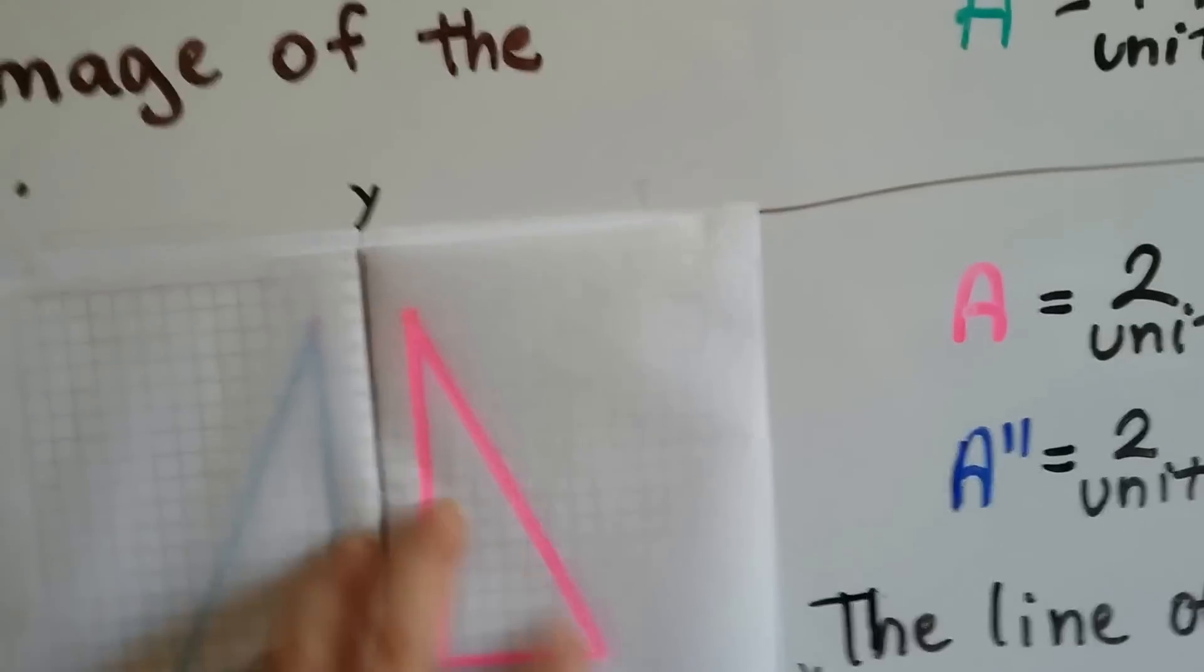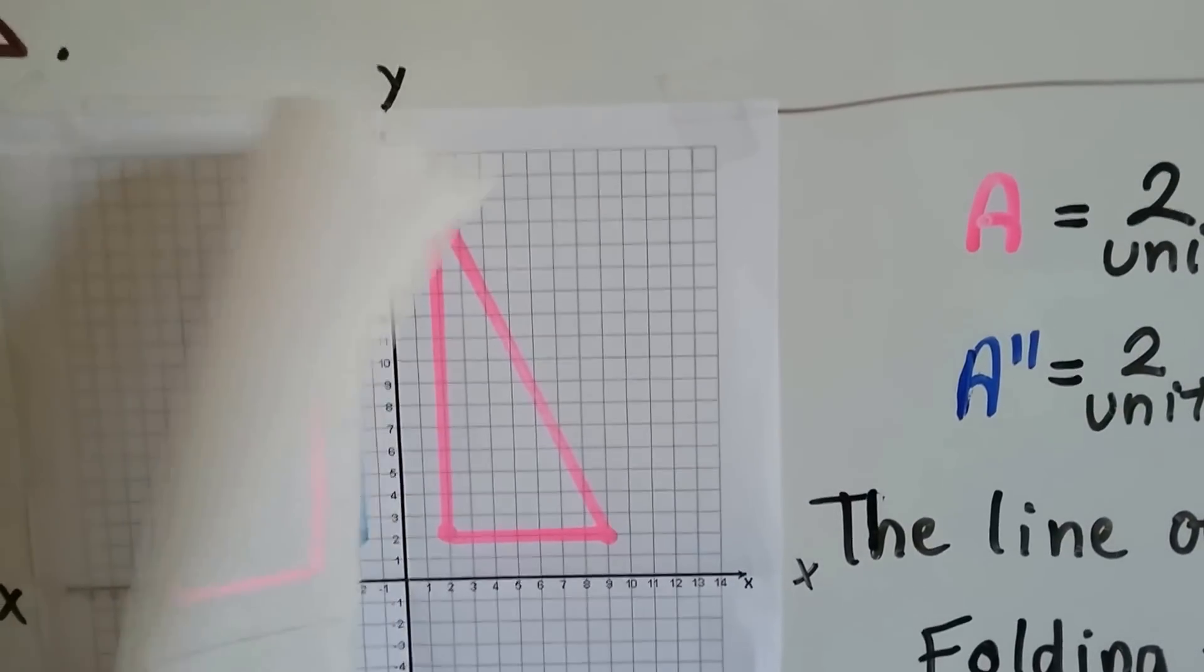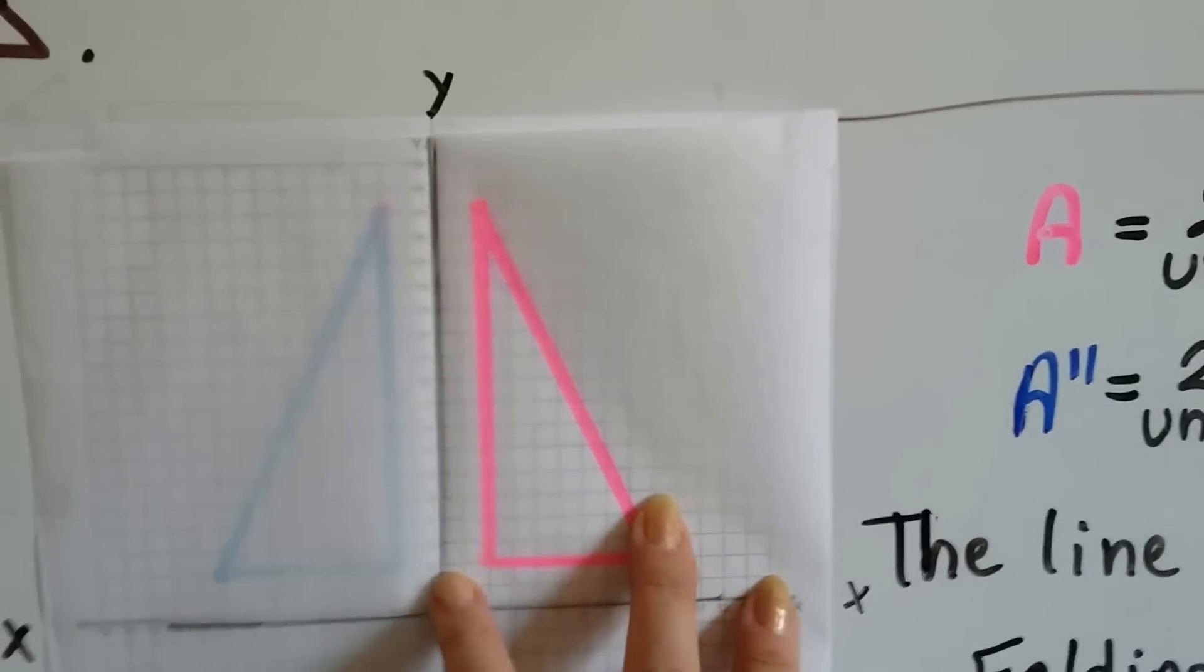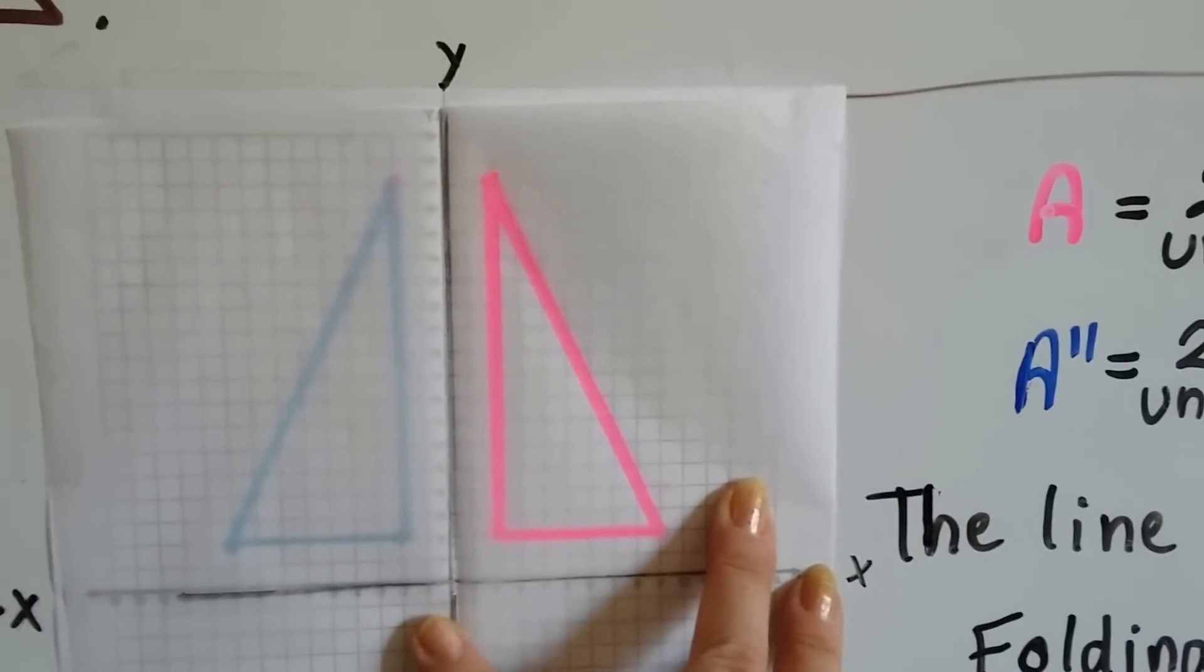Now let's look at this blue triangle. Look what I did here. I made some tracing paper and I put this pink triangle there. And when you lay the tracing paper down, you can see it perfectly.